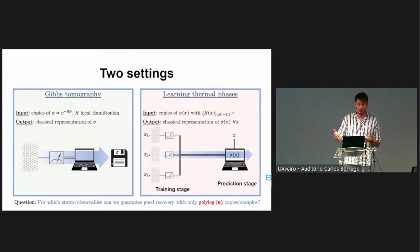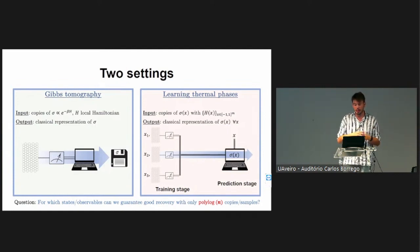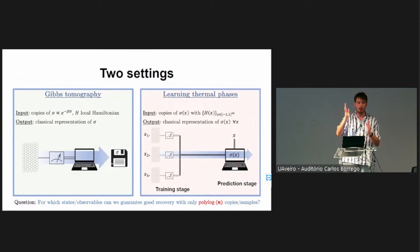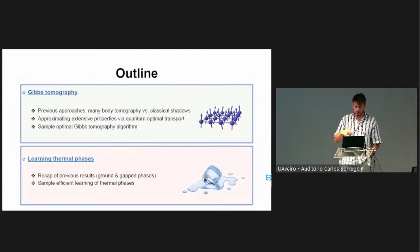In our case we'll make the additional assumption that this is the Gibbs state corresponding to some local Hamiltonian. The second setting we're going to consider is learning thermal phases of matter. This is inspired by work by Richard and co-authors, where they considered the setting where you're not necessarily given copies of the same state but a whole family of states indexed by parameters X. You don't want to learn something about one state but this whole family parameterized by X — again all in the poly-log n copies regime.